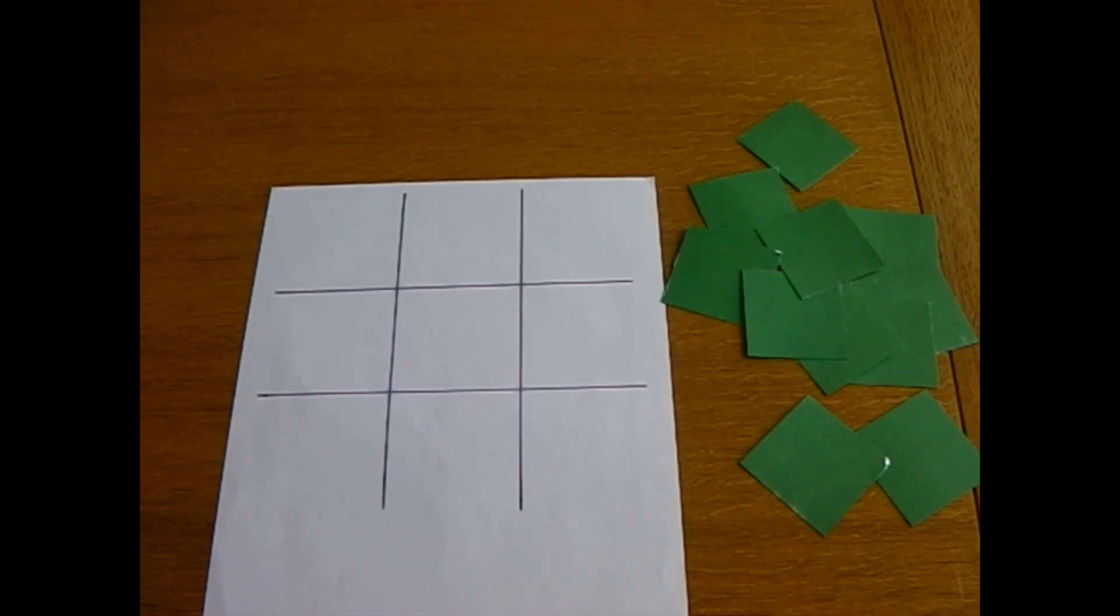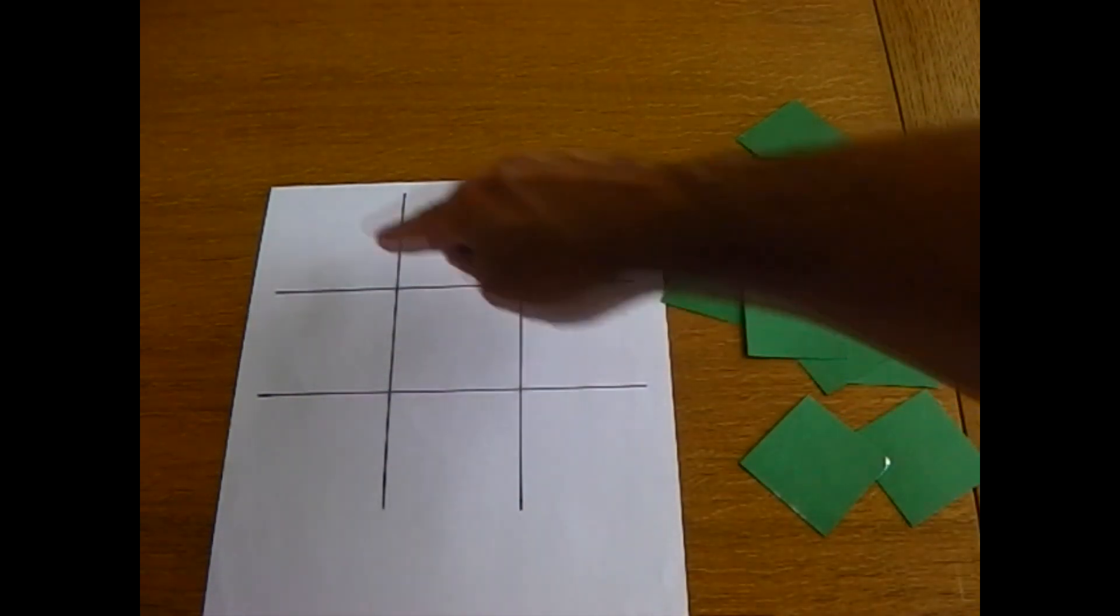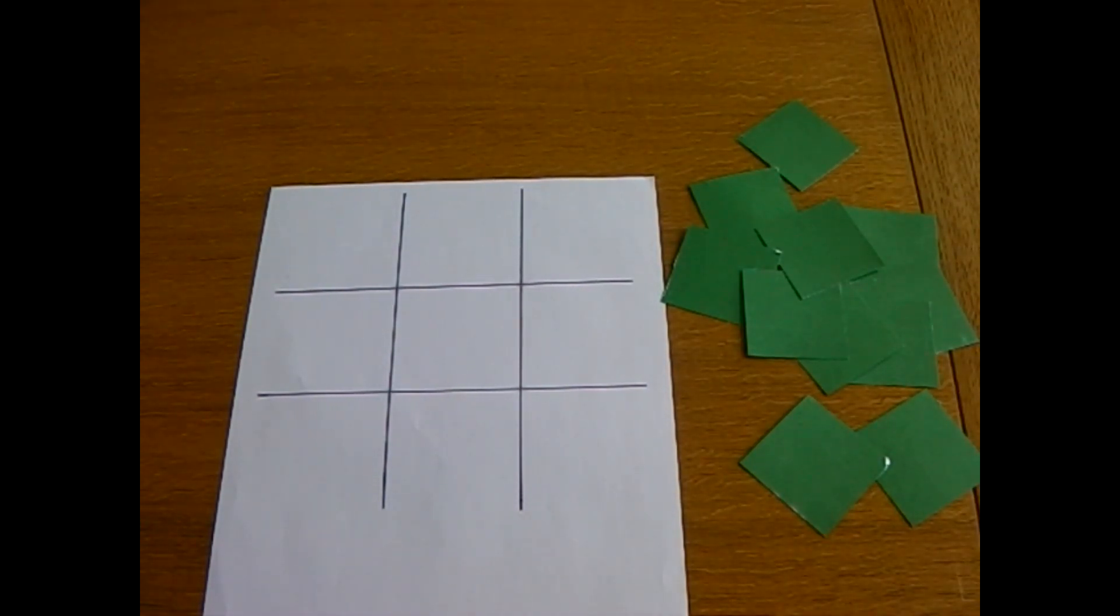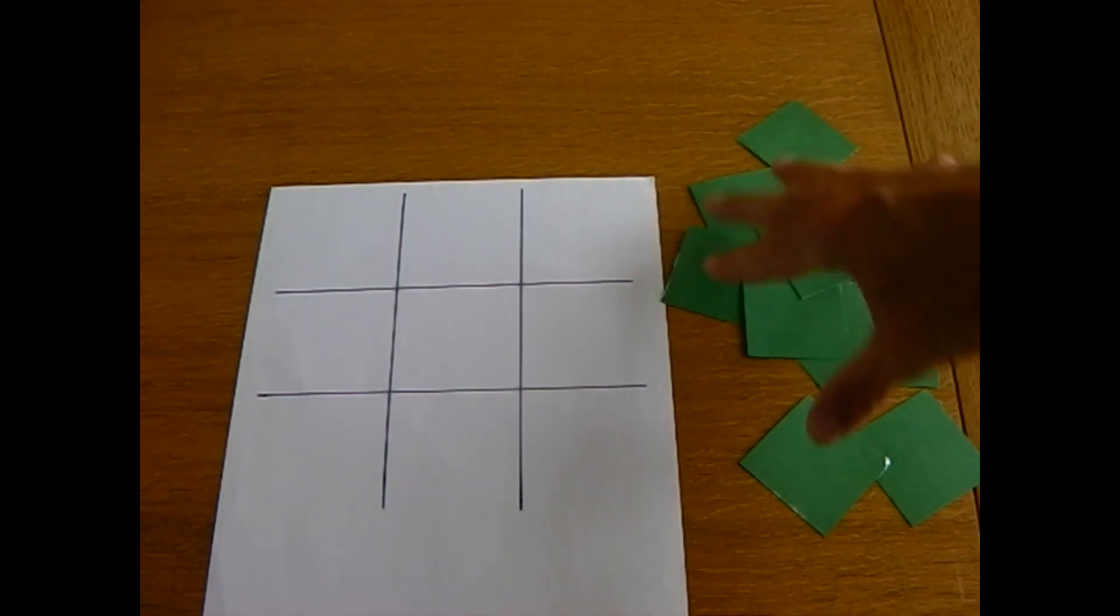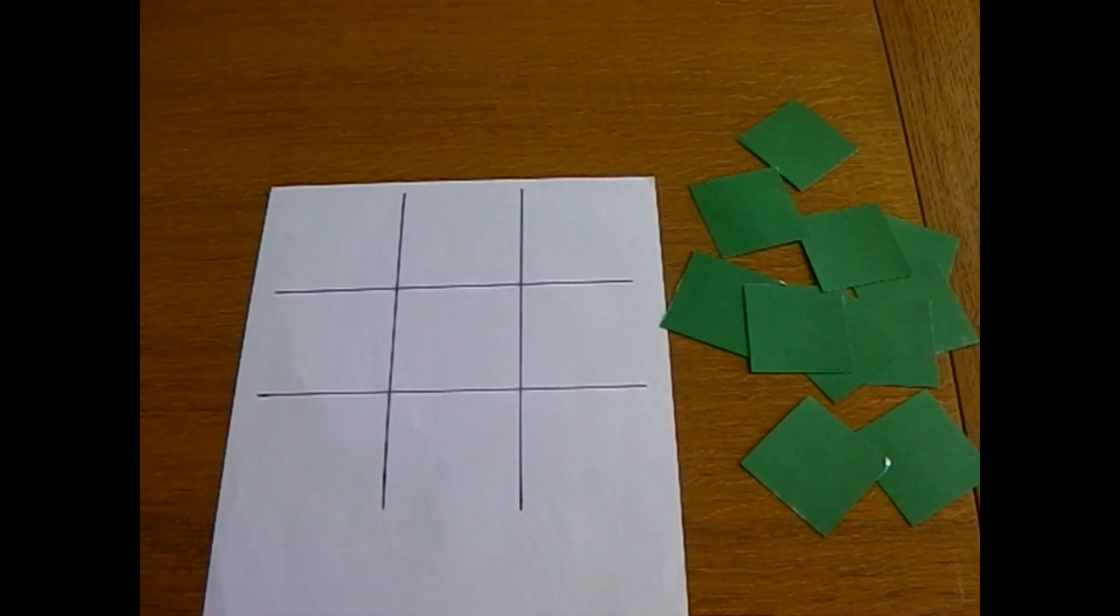The aim is to make a line of three numbers that when added together make a total of 20. Depending on which numbers come out first and where I place them, sometimes it's possible and sometimes it's not. I'm trying this challenge alone, but you could play in pairs.